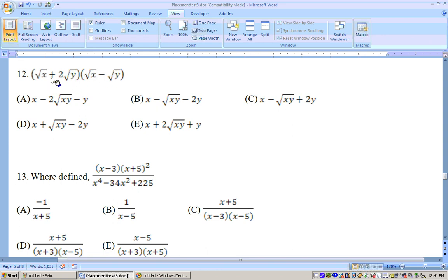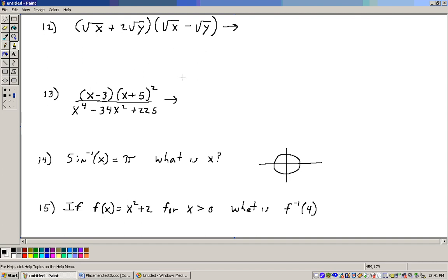Problem 12 needs us to FOIL this together: the square root of x plus two square roots of y times the quantity square root of x minus the square root of y. So I have this problem written down here, and we'll have to FOIL this together.